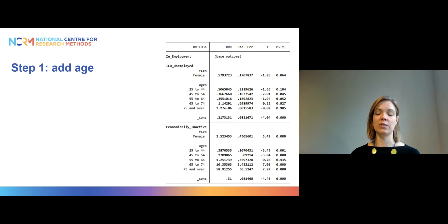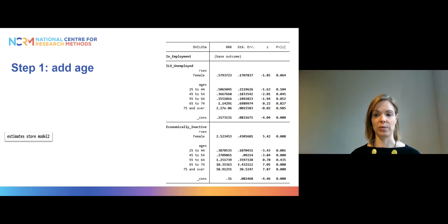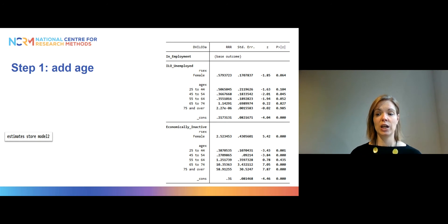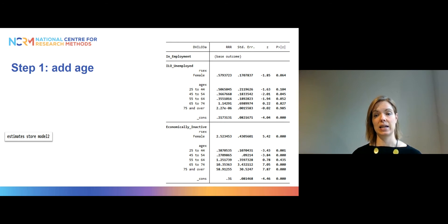Here the information is presented as odds ratios rather than log odds. In Stata, if we want to see if age is significant in the model, we could start by looking at the statistical significance of the individual categories shown in the far right column of the table. But it's a bit difficult to say based on that alone — some categories are significant, especially in the economically inactive versus in-employment model, while in the unemployed versus in-employment model you actually have quite large p-values. So it's difficult to say what exactly is going on with age. Instead, we can use a likelihood ratio test to test whether age as a whole is significant in the model.